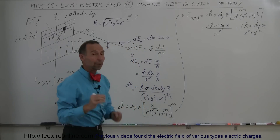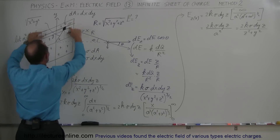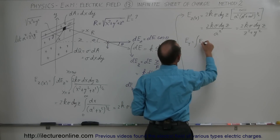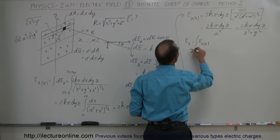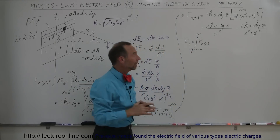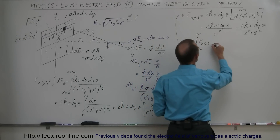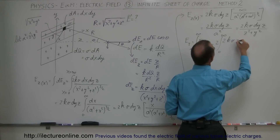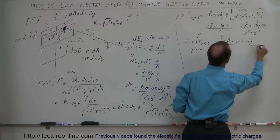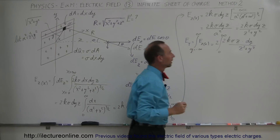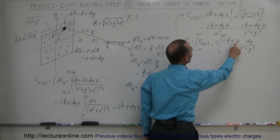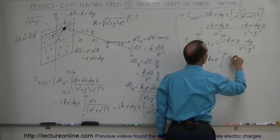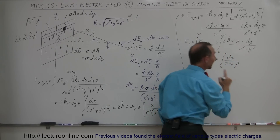Now I integrate in the y direction. Taking the result of the x integration and integrating from y = 0 to infinity, doubling it for symmetry, we get E_total equals 2 times the integral from 0 to infinity of 2k sigma z dy over (z² + y²). Since 2k sigma and z are all constants, they come outside the integral, giving 4k sigma z times the integral from 0 to infinity of dy over (z² + y²).